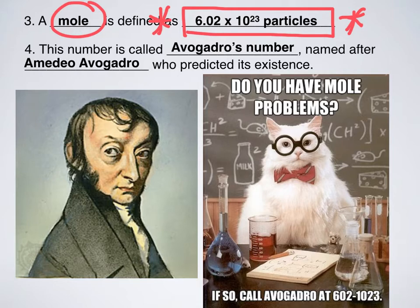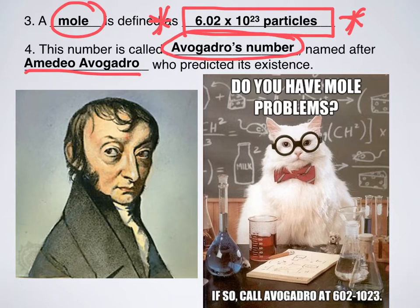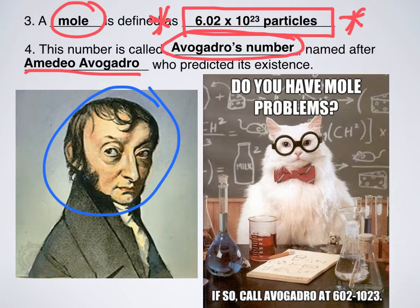Now, what do we call that? That's called Avogadro's number, and it's named after Amadeo Avogadro. And this guy, right here, is Amadeo Avogadro. He didn't calculate this amount, but he did predict that it existed. So even though he technically didn't give us the number himself, his experiments helped lead us to this number. And since he was the first one to kind of predict that it existed, we named it after him, and that's Avogadro.